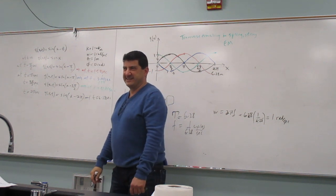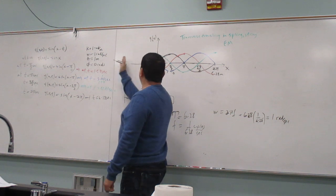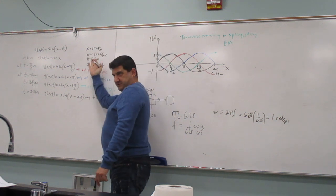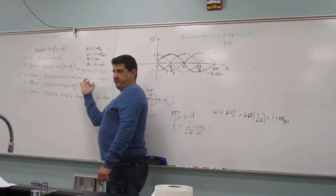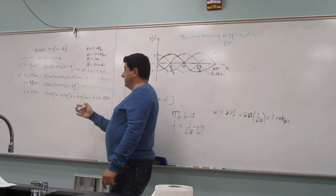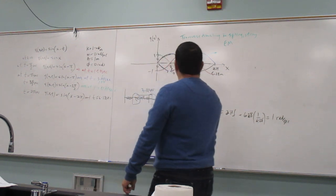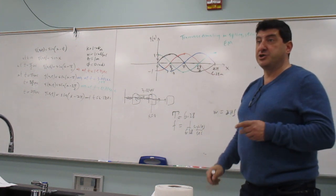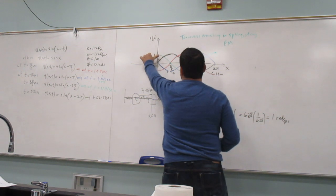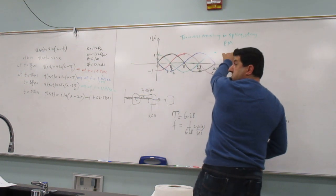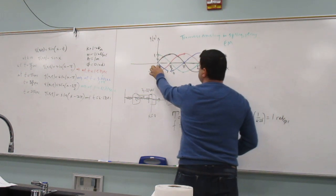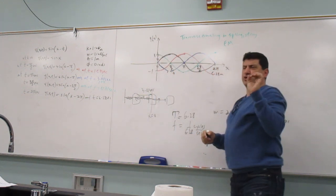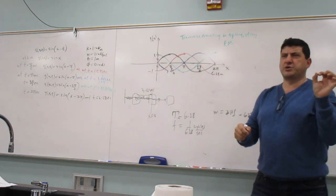This takes us back to the initial problem that told us omega is 1. We kind of proved that — in other words, it proved that the picture we drew was correct and corresponds to this wave equation.